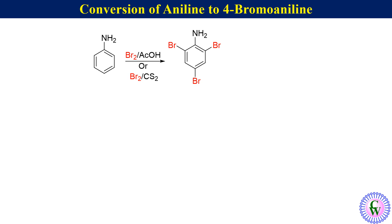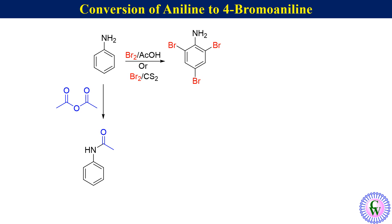To synthesize 4-bromoaniline from aniline, aniline is first allowed to react with acetic anhydride to produce acetanilide. The aromatic ring of acetanilide is less reactive because the lone pair of nitrogen is conjugated with the carbonyl group and is less available to be in resonance with the electrons of the ring.